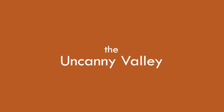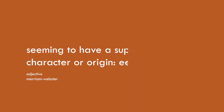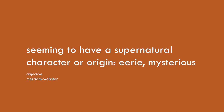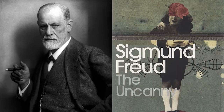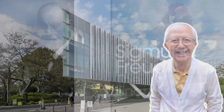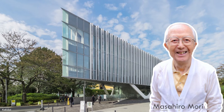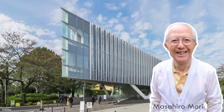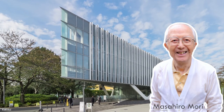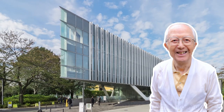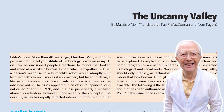The word uncanny is defined as seeming to have a supernatural character or origin — eerie or mysterious. Sigmund Freud wrote a book called The Uncanny in 1919, in which he studied the experience of something not only mysterious, but strangely familiar. The word was first used in our context by Masahiro Mori, a professor at the Tokyo Institute of Technology, who in 1970 published his titular essay, The Uncanny Valley, in the Japanese journal Energy.